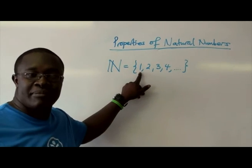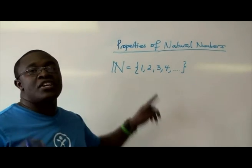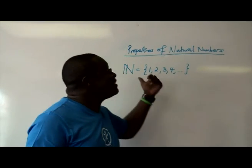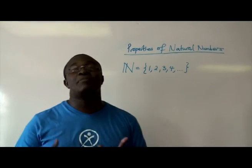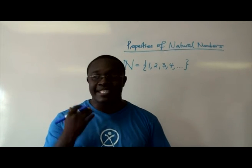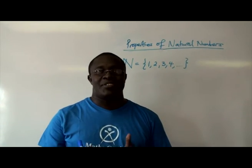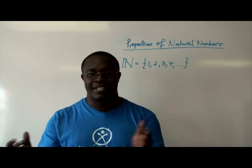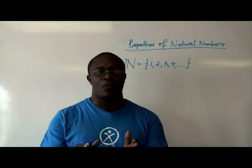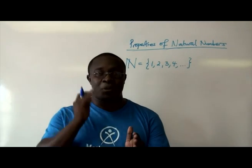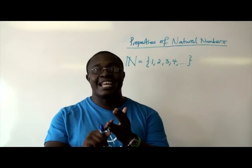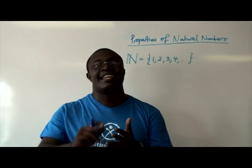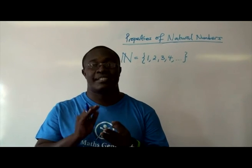So whenever you hear of natural numbers, think of counting numbers. And these natural numbers cannot be negative as well. Imagine counting people and counting yourself as negative 1, negative 2 — that is impossible, right? So they are positive and they are whole numbers, and they do not include 0.